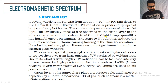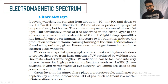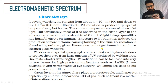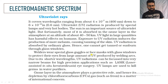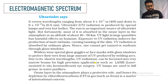Ultraviolet light is very harmful to us. If we are exposed to ultraviolet radiation for a long time — like when we go out in the sun — our skin darkens because ultraviolet rays cause the quantity of melanin in our skin to increase. However, ultraviolet radiation is absorbed by ordinary glass, so when sunlight passes through glass, the UV part is absorbed and we don't get tanned. Welders wear special glass goggles and face masks to protect their eyes from the large amount of UV produced by welding arcs.